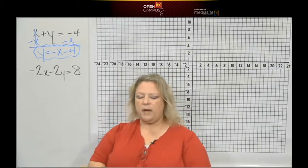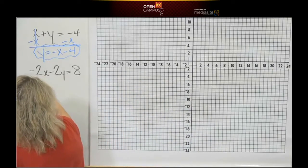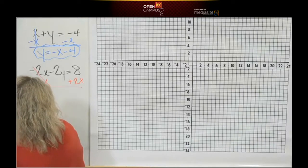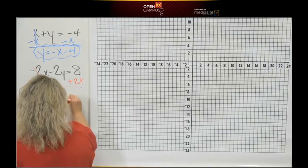Now let's get the other one by itself. We have negative 2x. Let's add that 2x to the other side so that we can move that on over there and get negative 2y is equal to positive 2x plus 8.